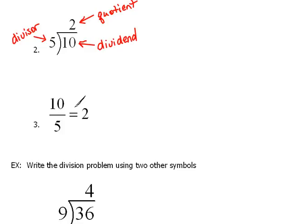And our numbers are still, even though they're in a different position, they still have the exact same terminology. This 10 is still called the dividend. The 5 is still called the divisor. Oops, I didn't spell that so nicely there. And our 2 is still called our quotient.